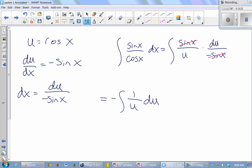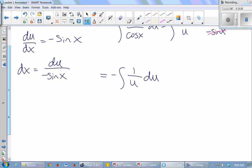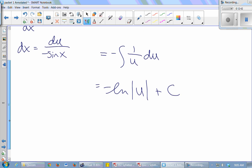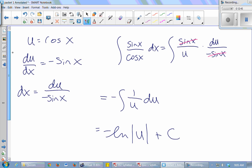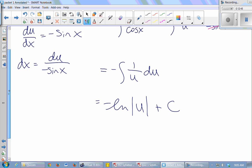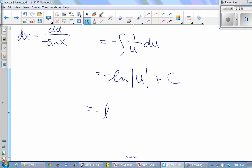All right, what's the antiderivative of 1 over u? ln, yep. So this is negative the ln, the absolute value of u. And it's absolute value because you can't plug a negative into the ln. Okay, and then the last thing I have to do is replace u with what I made it equal at the beginning, cosine x. So this is negative ln of cosine x plus c. There is your general antiderivative of tangent.